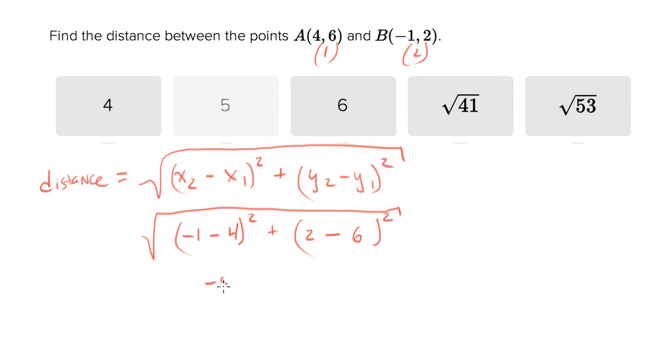So negative 1 minus 4 is negative 5. 5 squared plus negative 4 squared, which equals 5 times 5 is 25 plus 16. 25 plus 16 is 41, so this will be equal to root 41.